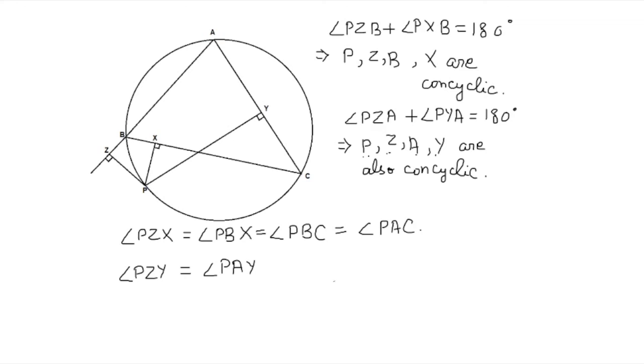Similarly, angle PAY is same as angle PAC. So from both of this, now we have that angle PZX is equal to angle PZY, and this is the desired equality that we wanted. Now we have that Z, X, and Y are collinear points, and the line passing through them will be called the Simpson's line.